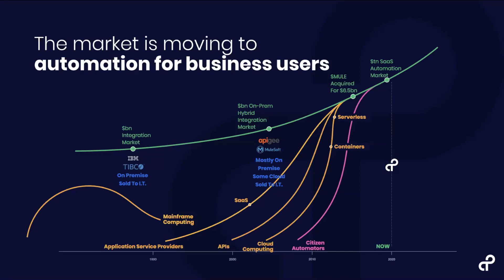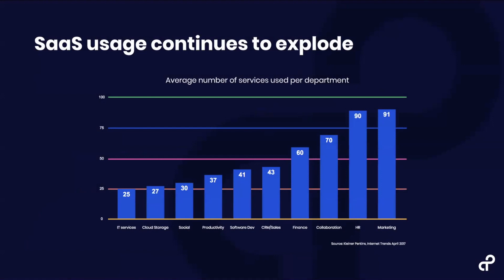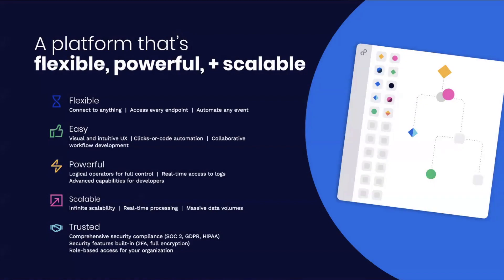The next slide comes from Kleiner Perkins' internet trends back in 2017 — anyone familiar with these knows they're run by Mary Meeker and are really impressive analyses of the entire market. You're looking at how many different software platforms exist in every single department of a company. Through HR and marketing alone there are some 90 different software platforms, and those departments don't necessarily have engineers dedicated to build out integrations, so you need a platform to really enable those teams.